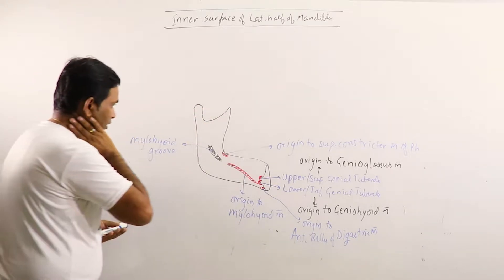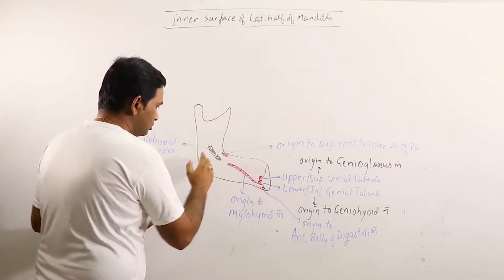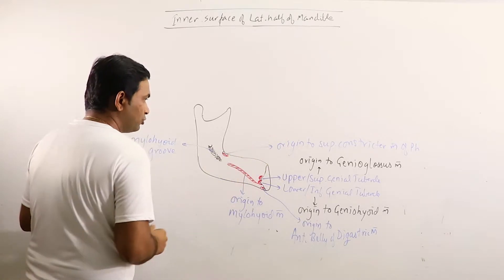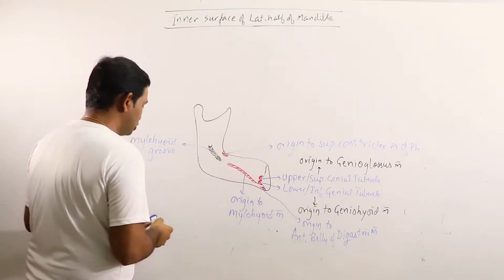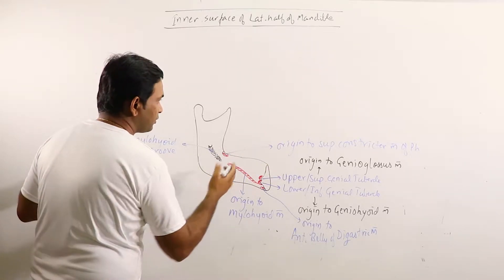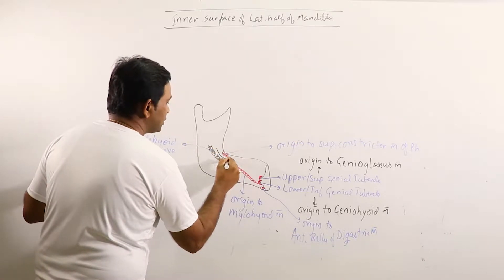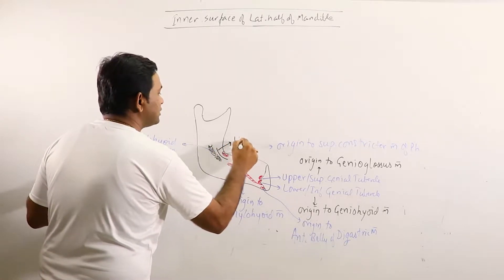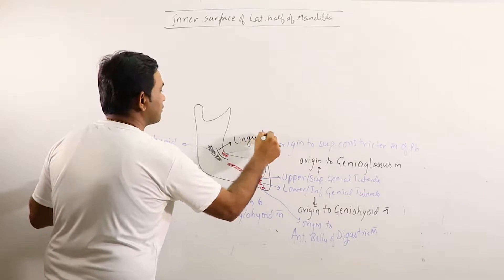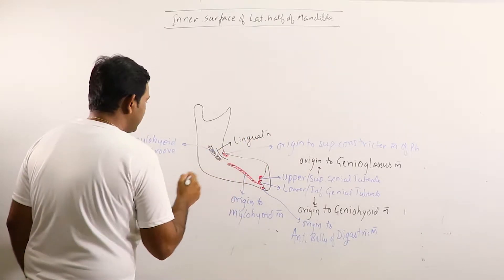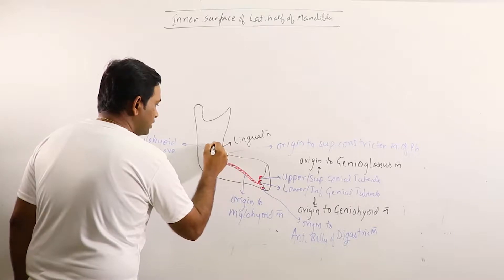Now just anterior to mylohyoid nerve and posterior to the origin of superior constrictor muscle we can observe a nerve. That is lingual nerve. And this is mandibular foramen. Anterior, just anterior to mandibular foramen.